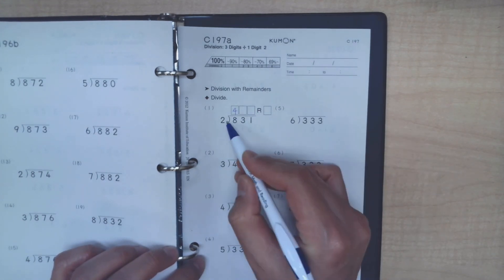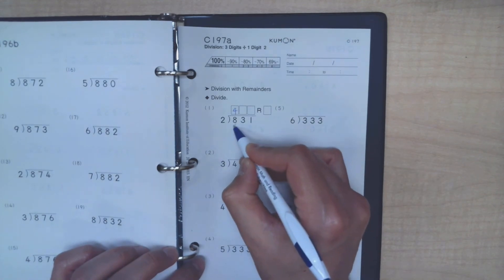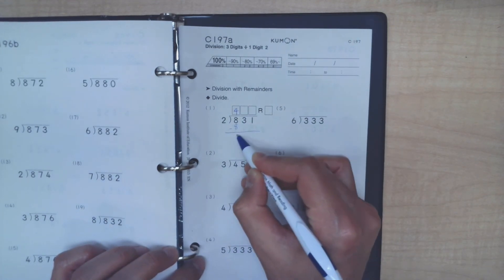But it's a perfect match. 2 times 4 is 8. Do our subtractions. We know that there's nothing.